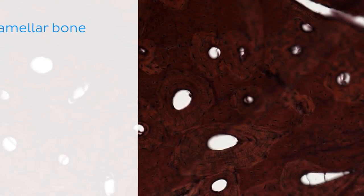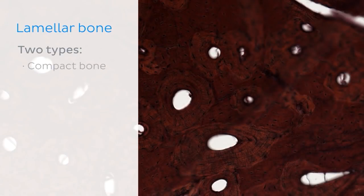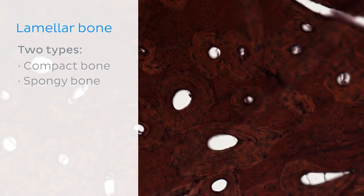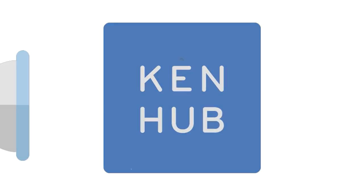Let's take a closer look at lamellar bone. There are two types of lamellar bone: compact bone and spongy bone, which are largely differentiated by how these groups of concentric layers are arranged or organised.